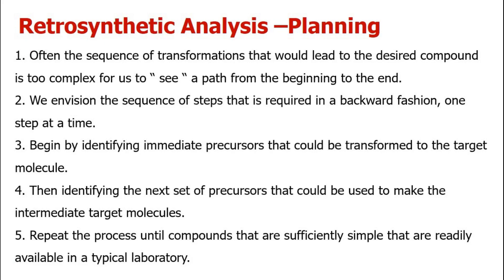There are several steps in retrosynthetic analysis planning. Often the sequence of transformations leading to the desired compound is too complex to see from beginning to end. We envision the sequence of steps in backward fashion, one step at a time — first identifying the immediate precursor that could be transformed to the target molecule, then identifying the next precursor, and repeating the process until we reach compounds that are sufficiently simple and readily available in the laboratory.